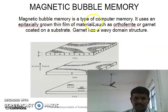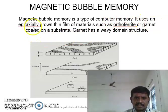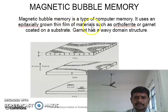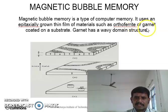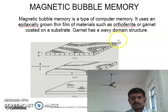The magnetic bubble memory is a type of computer memory. It is used on an epitaxially grown thin film of materials such as ferrites and garnets coated on a substrate. Garnet has a very distinct domain structure.